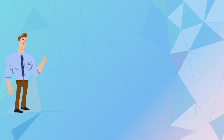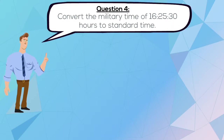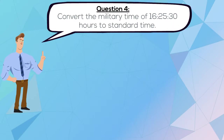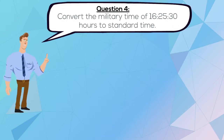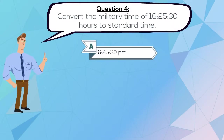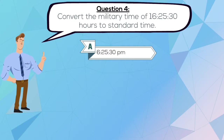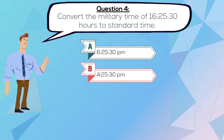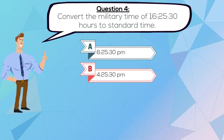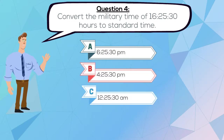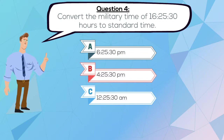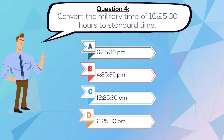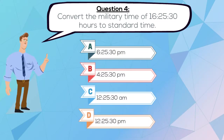Question 4. Convert the military time of 1625:30 hours to standard time. A. 6:25:30 p.m., B. 4:25:30 p.m., C. 12:25:30 a.m., or D. 12:25:30 p.m.